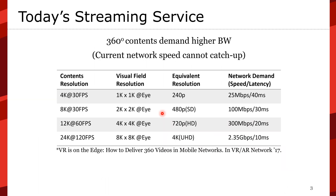Let's look at the content requirements of 360 video. The current network speed cannot catch up. For example, 1K by 1K resolution is only equivalent to 240p in general videos, and it requires 25 Mbps and 14 ms or less latency. For 4K at 30 fps HD quality, your system requires 4K by 4K, needing 300 Mbps and less than 20 ms latency. For full immersive quality it needs 8K by 8K, requiring 2.35 Gbps and less than 10 ms latency, which is unrealistic in a common network environment.